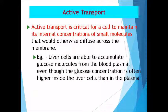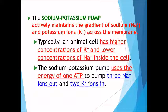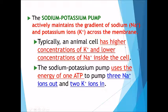Active transport is critical for a cell to maintain its internal concentration of small molecules that would otherwise diffuse across the membrane. An example of active transport is the sodium-potassium pump, which maintains the gradient of sodium and potassium ions across the plasma membrane. Animal cells have a higher concentration of potassium and a lower concentration of sodium inside the cell. The pump uses energy from ATP to pump three sodium ions out of the cell and two potassium ions into the cell.